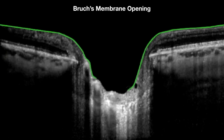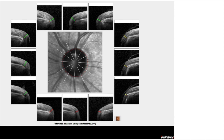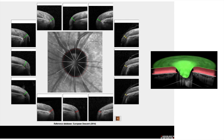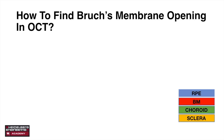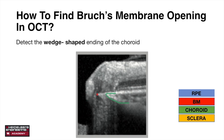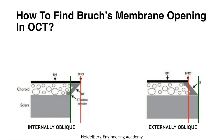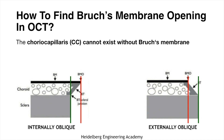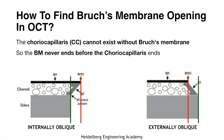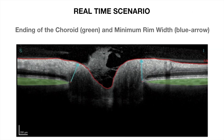The green line represents segmentation of the internal limiting membrane. The red line segments Bruch's membrane, with the Bruch's membrane opening depicted as a red dot. The 360-degree scan of the optic nerve head with BMO is shown. To find the BMO in OCT: first detect the green wedge-shaped ending of the choroid — BMO will be seen just adjacent to it. Bruch's membrane never ends before the choroid capillary's ending, whether internally or externally oblique, but can extend further than choroid capillaries. The ending of the choroid is shown in green and the minimum rim width is shown by the blue arrow.